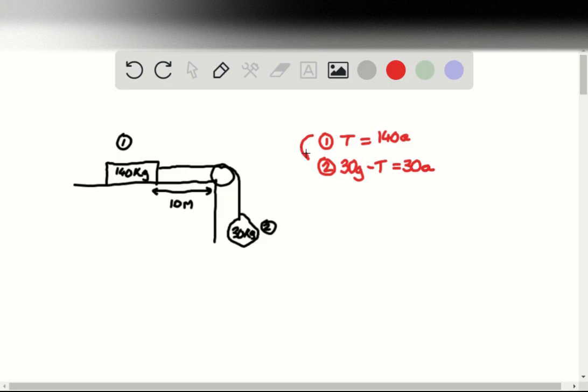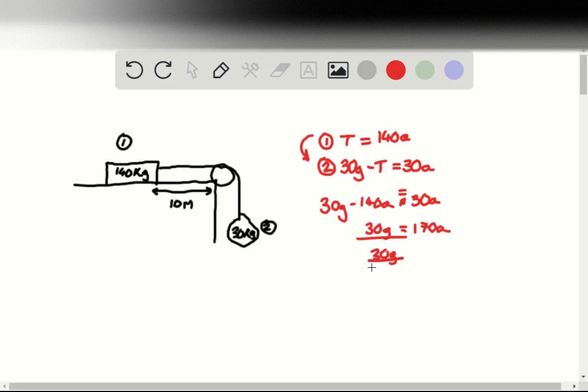And so we substitute the value for T that we got from equation 1 into equation 2, giving us 30g minus 140a is equal to 30a. So that would give us 30g equal to 170a. We're going to say that 30g over 170 is equal to the acceleration a.